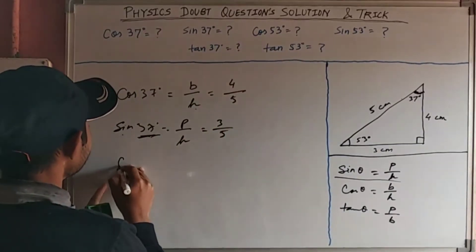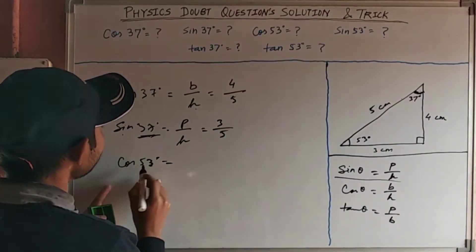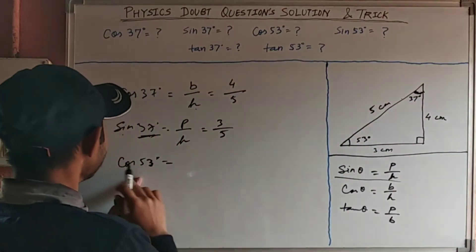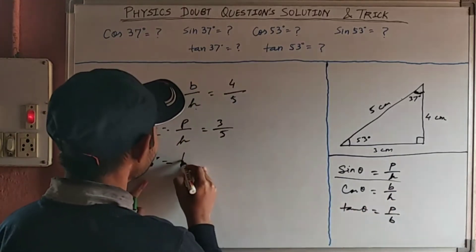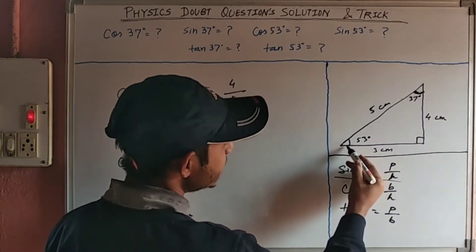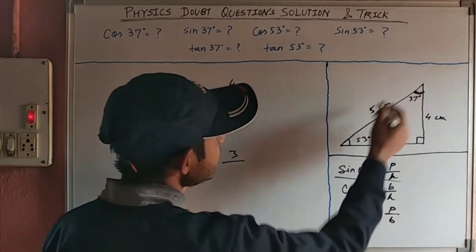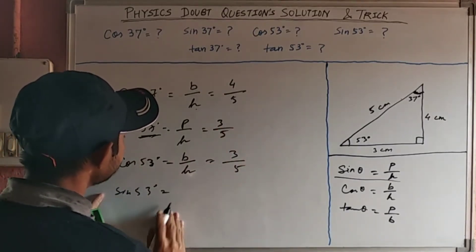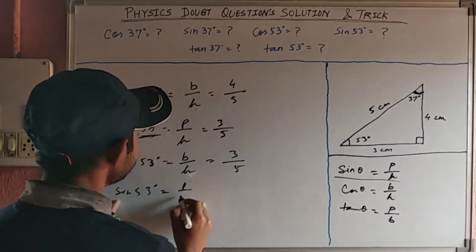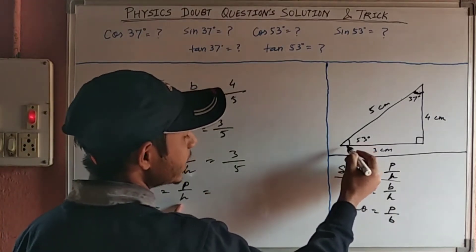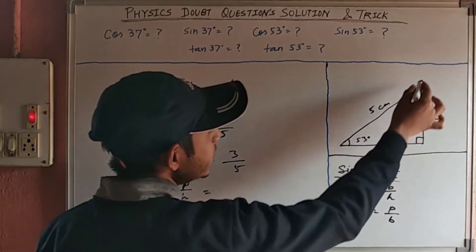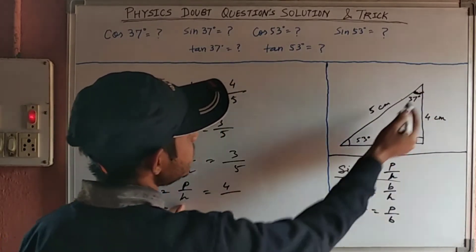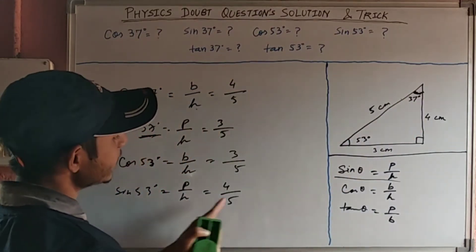Now cos 53°. We find this with respect to the 53° angle. For this angle, this is the height and this is the base. cos θ = base / hypotenuse. The base with respect to 53° is 3 and the hypotenuse is 5. So cos 53° = 3/5. Now sin 53°: sin θ = perpendicular / hypotenuse. The perpendicular is 4 and the hypotenuse is 5. So sin 53° = 4/5.